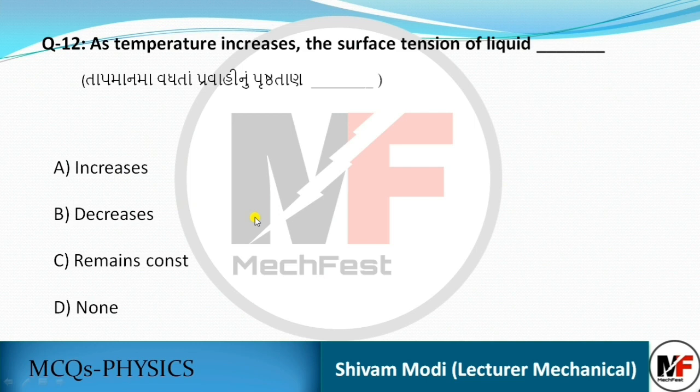As temperature increases, the surface tension of a liquid — what happens to it? It decreases (ghato thay). So the answer is: surface tension decreases as temperature increases.